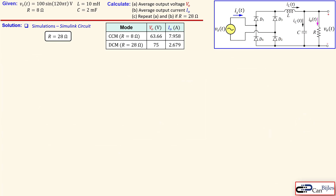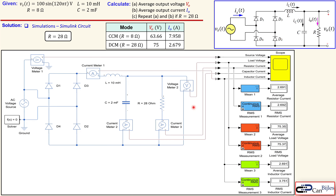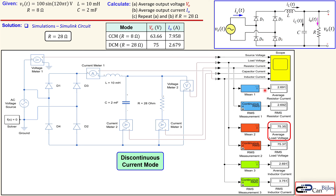For the Simulink circuit with 28 ohms, only the resistor value changes. The simulation shows the average load voltage is 75.35 volts, close to our calculated 75 volts, and the average load current is 2.69 amps, close to our calculated 2.68 amps. This is all as expected.